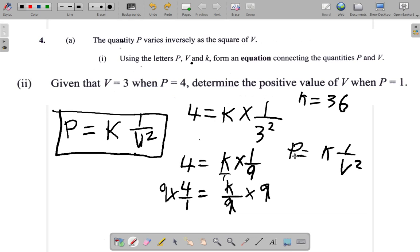Now, when P is 1, what we have is 1. Let me draw a line and separate these. P is 1. What we have is 1 equal K. We know K is 36. Multiplied by 1 over V squared.